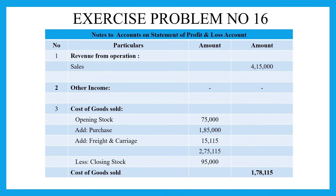Trading represents the revenue from operations. The purpose of our business operation is manufacturing, so the income is in the form of sales. Sales is 4,15,000 rupees. We also check for other income in the trading and profit and loss account, but there is no other income in this problem.